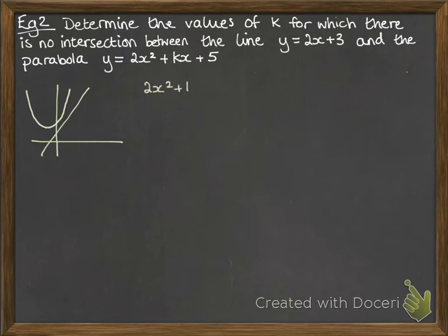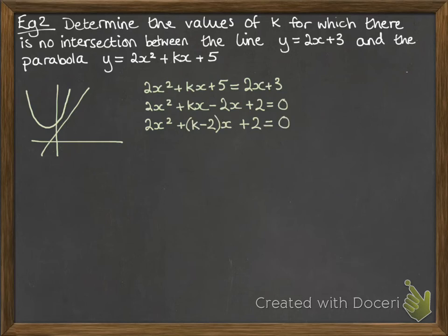Right, so we'll put the two equations equal to each other, rearrange it into a quadratic equal to zero. Now we need to be able to get the b term out of that, so we need to factorize that middle section, so we get k minus 2 times x. Now if we want there to be no intersection, we want no solution to that equation, so the discriminant has to be negative, less than zero.